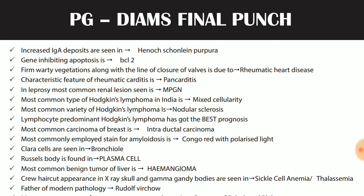MPGN is membranoproliferative glomerulonephritis. Most common type of Hodgkin's lymphoma in India is mixed cellularity — just remember India is a country of mixed cultures. Most common variety of Hodgkin's lymphoma worldwide is nodular sclerosis.